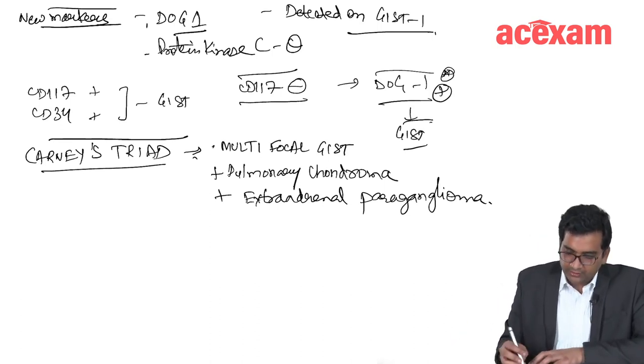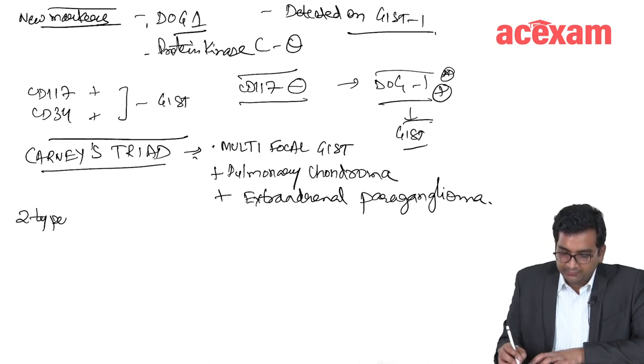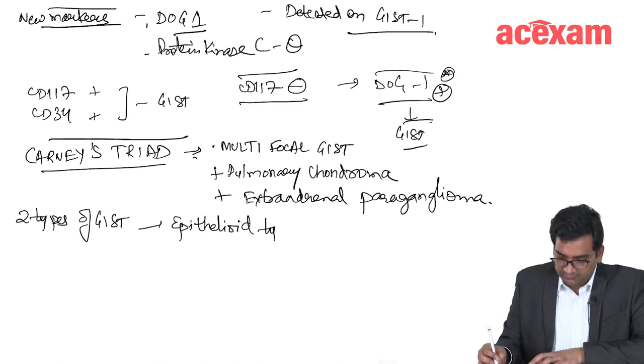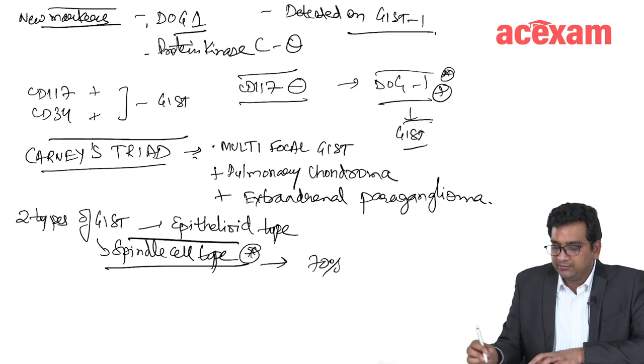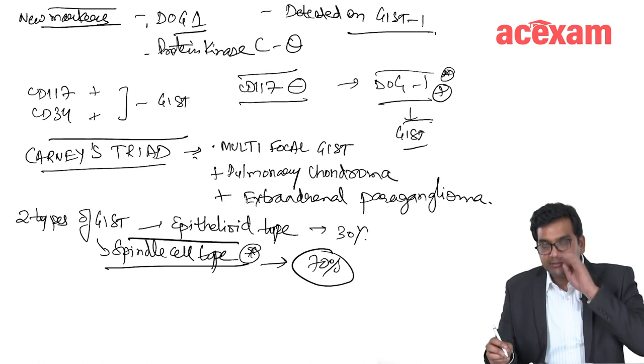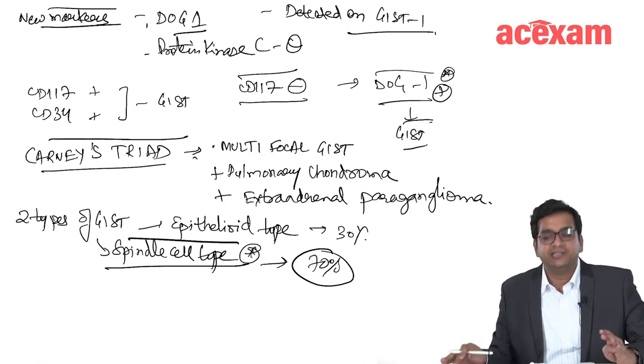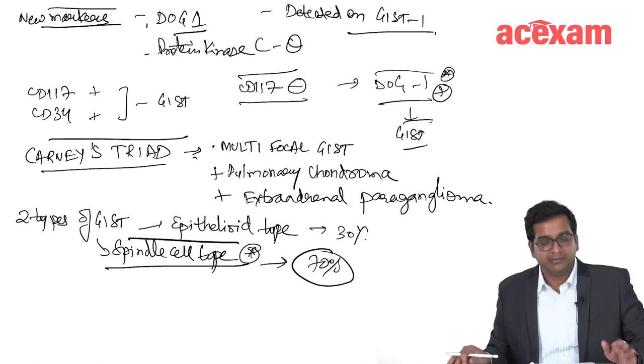There are two types of GIST: epithelioid type and spindle cell type. Spindle cell type is more common at 70%. Epithelioid type is seen in 30%. Spindle cell type is more common.